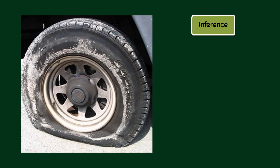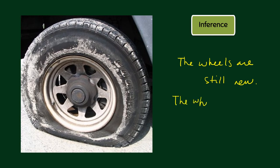Next, what would be your inference here? Remember, it is something that you infer based on your observations. One of my observations is that the tire wheels are still rough, so I can say that the wheels are still new but it got flat. What else? The wheel must have been broken on a hot summer day.